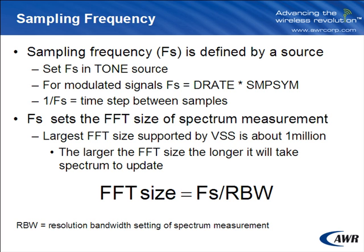1 divided by the sampling frequency is the time step between samples. Note that when you're working with digital data, by definition it has one sample per symbol, and hence its sampling frequency is equal to its data rate.